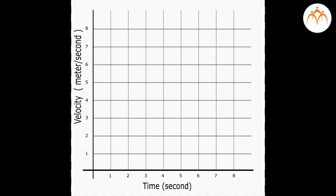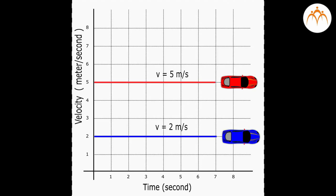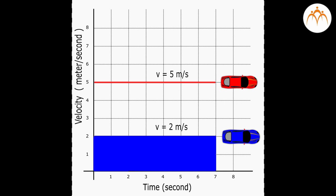Velocity-time graph: the variation in velocity with time for an object moving in a straight line can be represented by a velocity-time graph. Time is plotted on the x-axis and velocity on the y-axis. These graphs record an object's velocity at different times — higher means faster, not farther. The line at v = 5 m/s is higher because that car is moving faster than the one at v = 2 m/s. When the graphs are horizontal, velocity is constant throughout the interval. The total displacement of the blue car over 7 seconds is 14 meters, equal to the area of the shaded region.